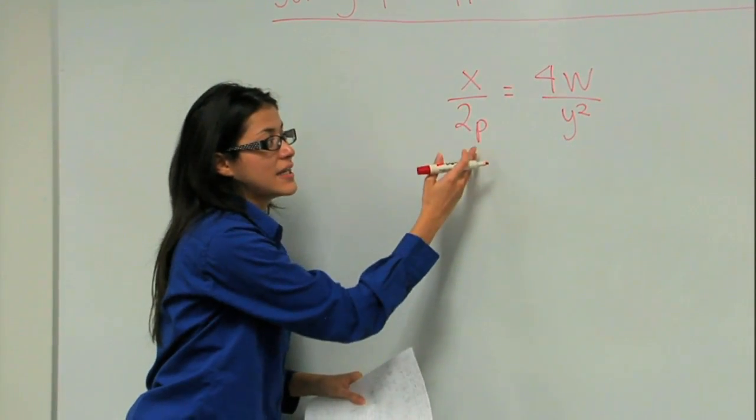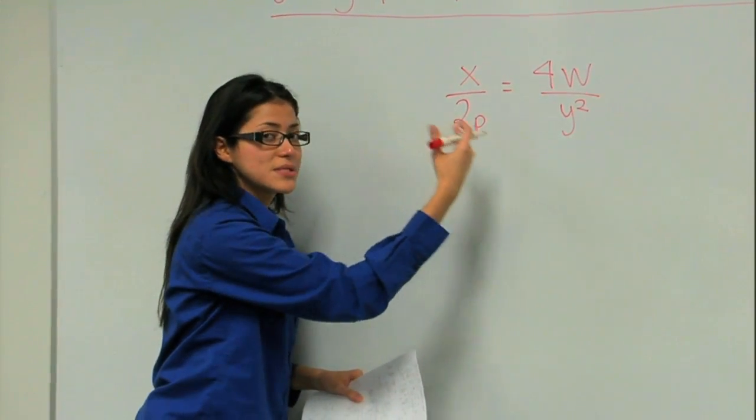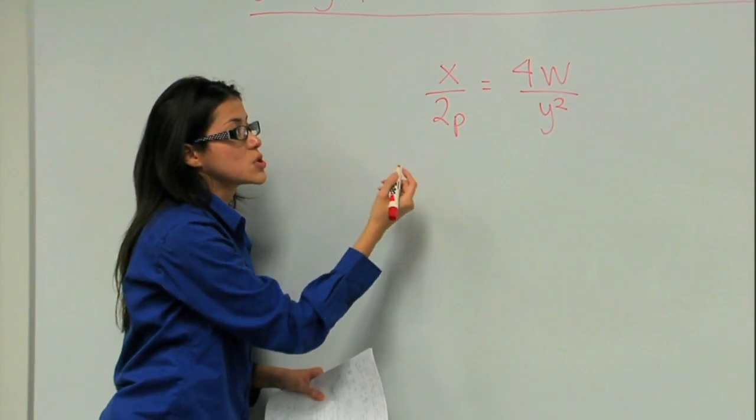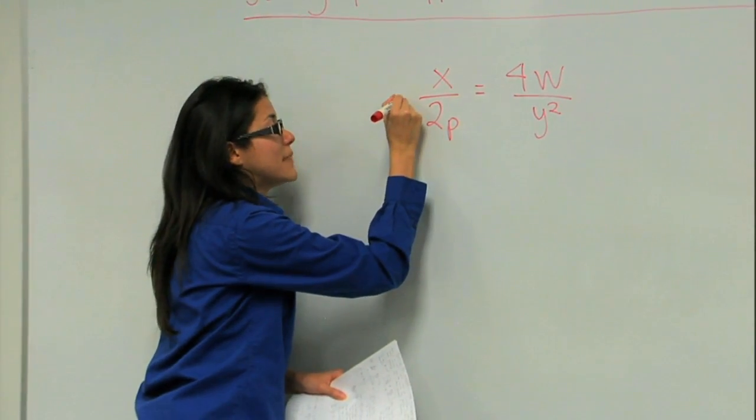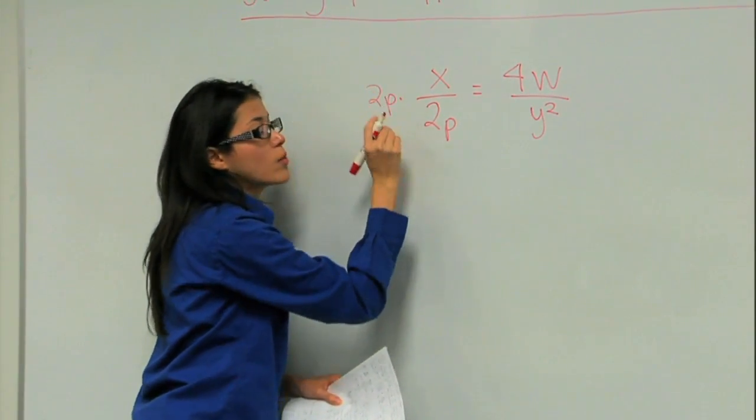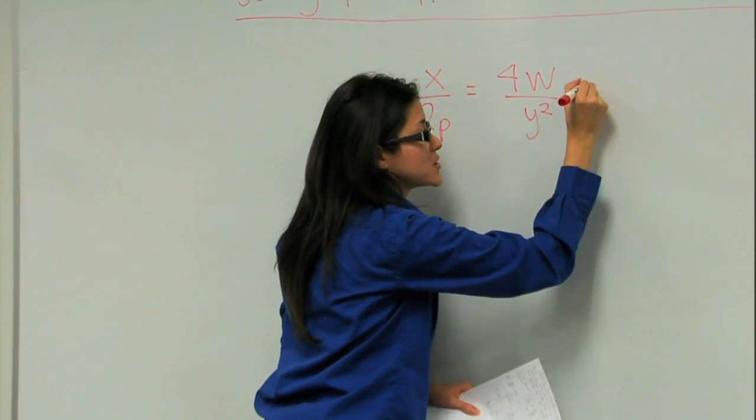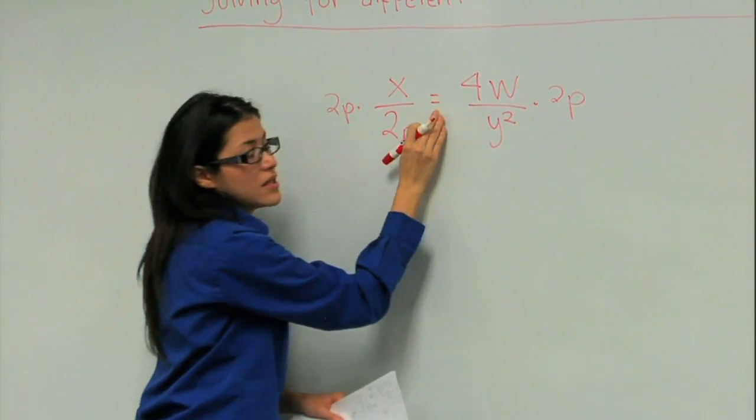Since it's dividing, that means we have to do the opposite of division, which is multiplication. So, we multiply by 2p on both sides of the equation to maintain the equality.